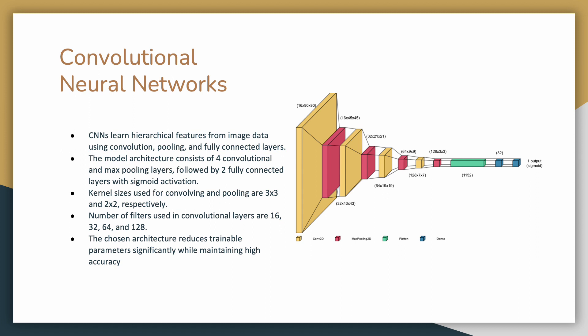The output is flattened and passed to two fully connected layers using sigmoid activation to produce a single neuron output with a probability between 0 and 1 that the image is a wildfire. The chosen architecture reduces trainable parameters significantly while maintaining high accuracy for binary image classification and wildfire detection.